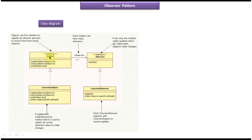On the left side you can see interface subject. It has three methods: the first method is register observer, the second method is remove observer, and the third method is notify observers. These three methods will be implemented by concrete subject.